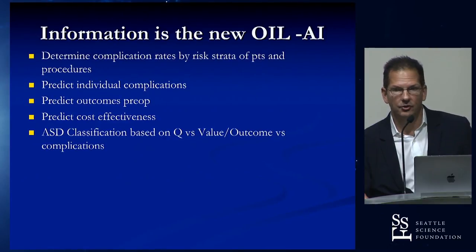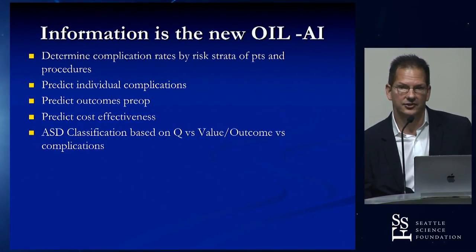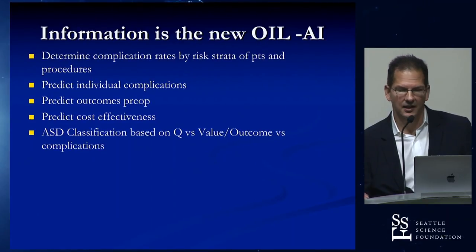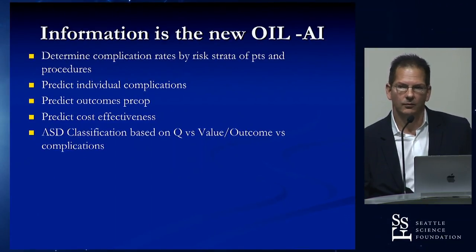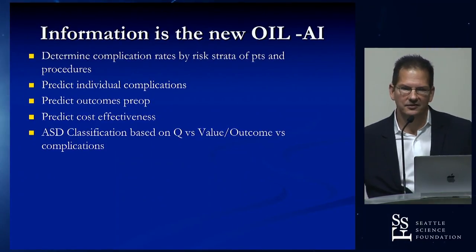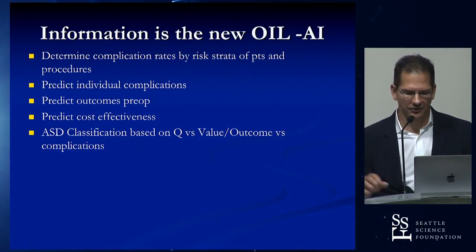We can potentially develop a new classification system that may eventually replace the Schwab classification — designed around what we really care about, which is complications and outcomes, not just purely the sagittal plane.